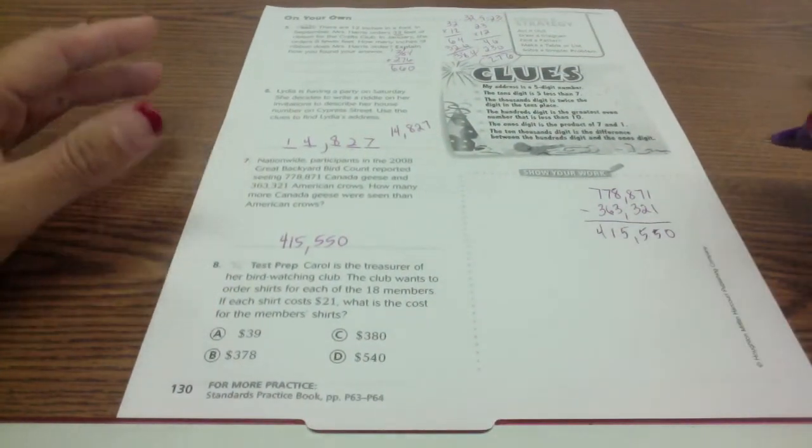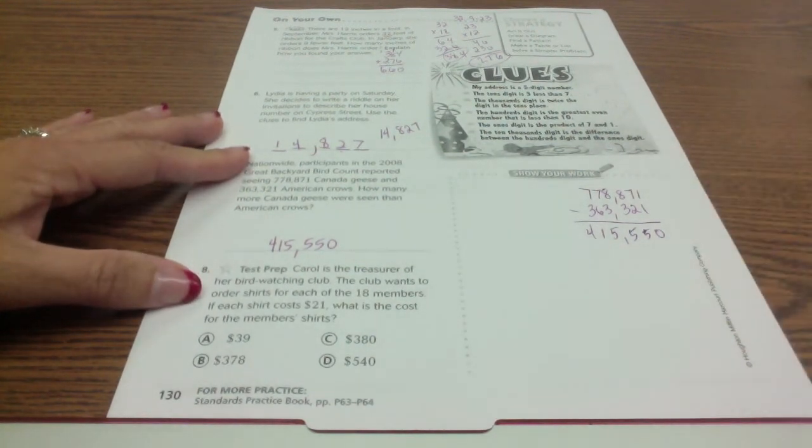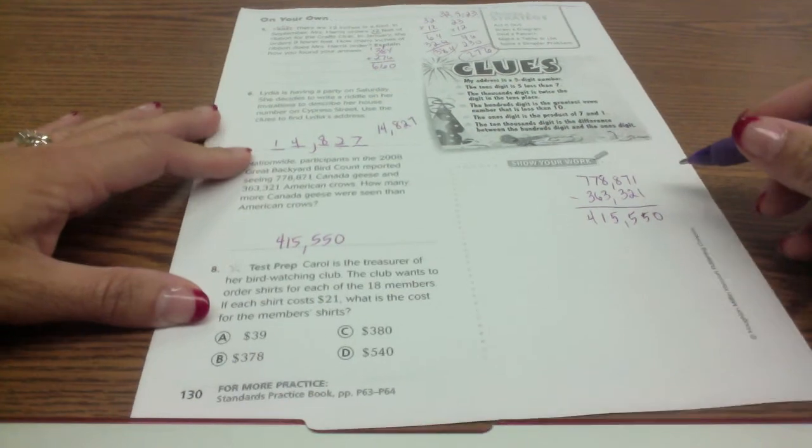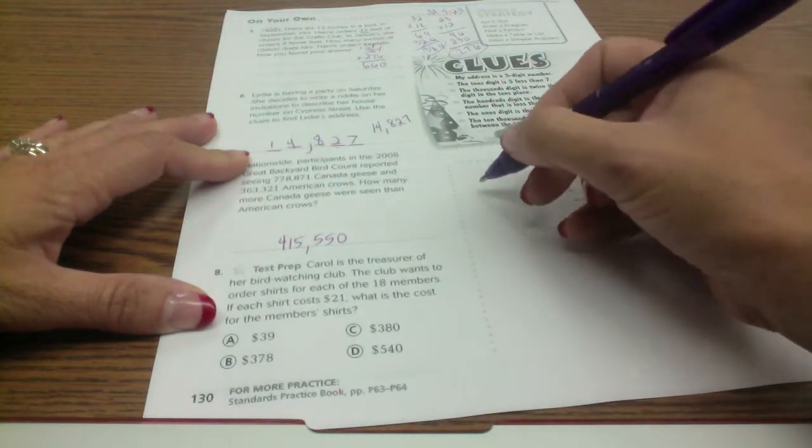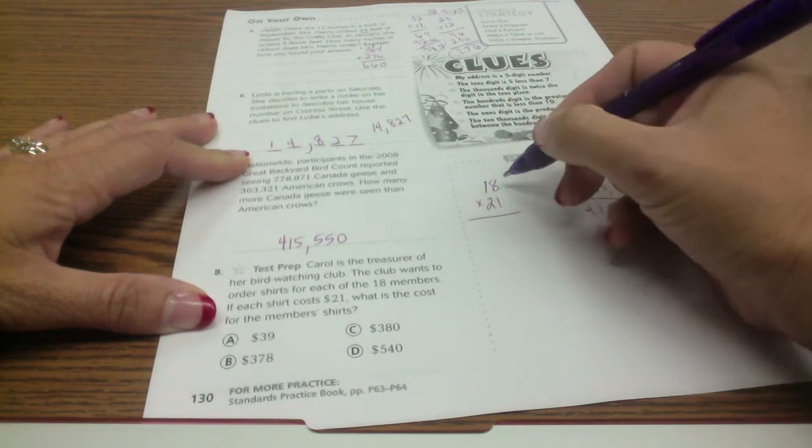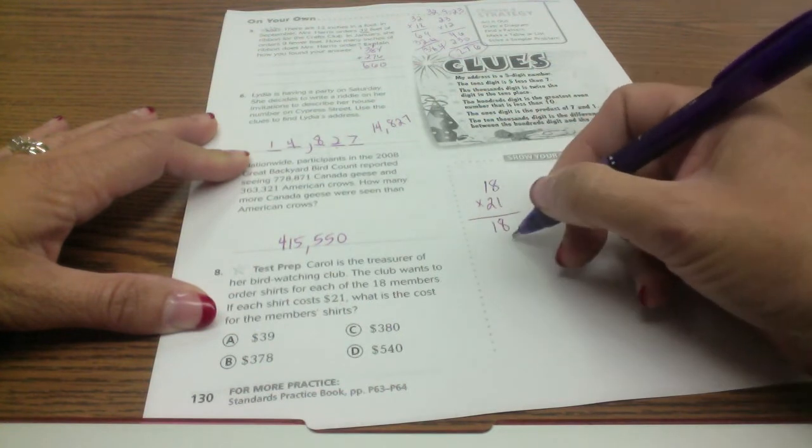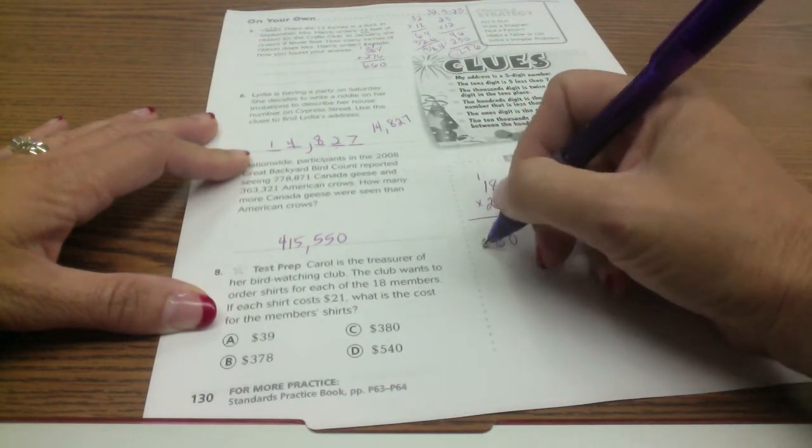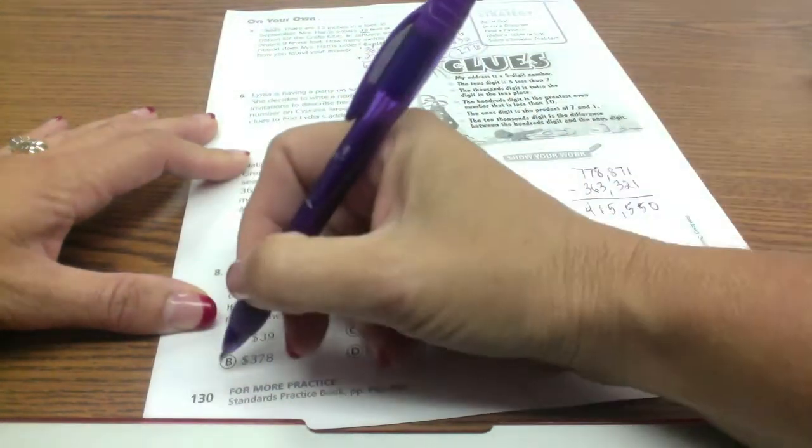And the last one, Carol is the treasurer of her bird watching club. The club wants to order shirts for each of the 18 members. If the shirts cost $21, what is the cost for the members' shirts? So we're going to multiply the price of the shirt, 21, times the number of members. I'm going to do this first. 18 times 21. So 1 times 18 is 18, 20 times 8 is 160. Regroup that. 2 times 1 is 2 plus 1 is 3. I'm going to add those and I get 378, so it's B.